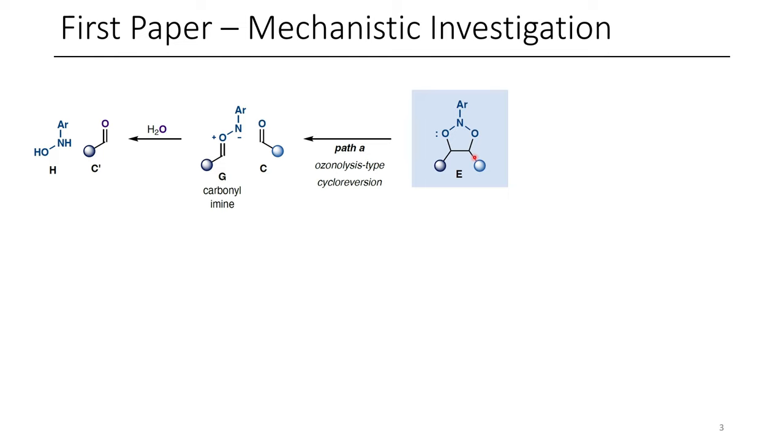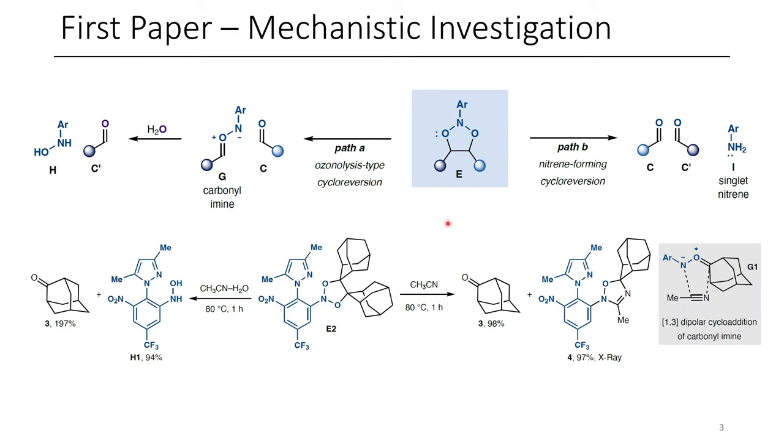This is then able to undergo a cleavage to afford two carbonyl compounds. Depending on whether this is a di, tri, or tetra-substituted alkene, you'll get different types of products. And so the mechanism of this reaction was explored a couple different ways. There's two different paths that it could go through. The first is through the formation of an aldehyde, as well as this carbonyl amine, which could then be hydrolyzed by water to afford a hydroxylamine, as well as the corresponding carbonyl. Alternatively, this could undergo another process affording both carbonyls, as well as a nitrene.